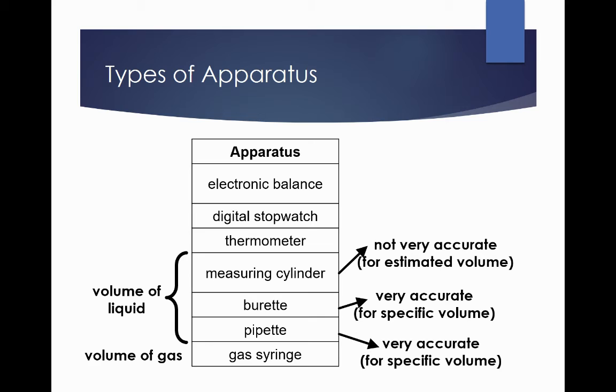The burette and pipette are accurate and we use them for specific volumes. Especially for pipette, we use them for a particular volume such as 25.0 cm³.